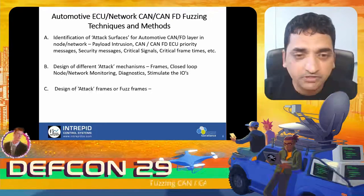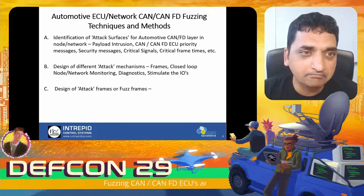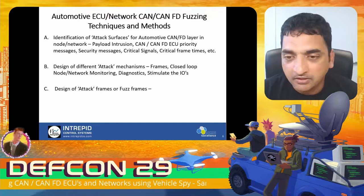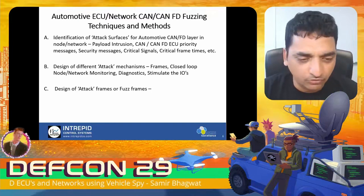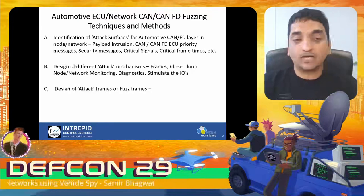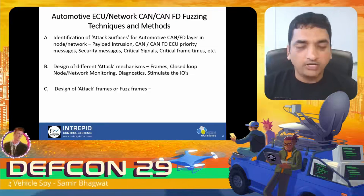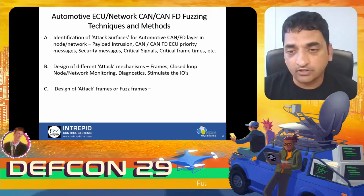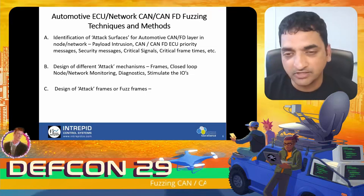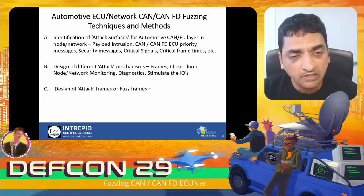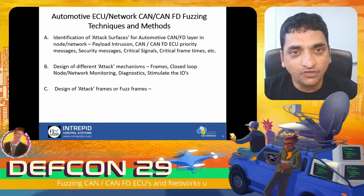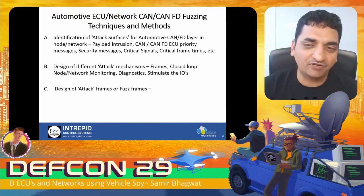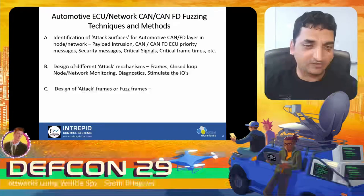Useful mechanisms include monitoring nodes for abnormal outputs — such as through diagnostic queries, or stimulating IOs and observing the response on the network while fuzz tests are running. In ECU world, getting feedback from the system is the key to making sure fuzzing yields relevant results.